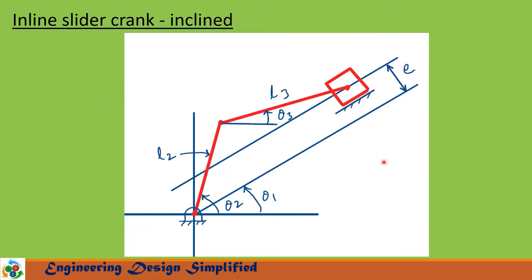In this picture, shown is an inclined offset slider crank mechanism. The inclination of the slider is at an angle theta 1 with the horizontal, and crank length is L2, coupler length is L3, and offset is E. The angle between horizontal and crank is theta 2, and the angle between horizontal and L3 — that is, the coupler — is theta 3. Let us see in the coming slides how to derive equations to find displacement, velocity, and acceleration.